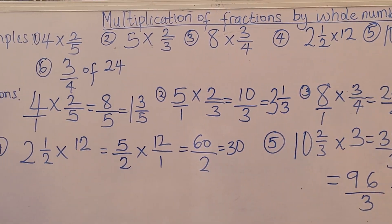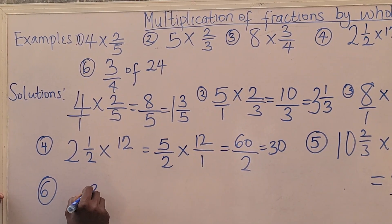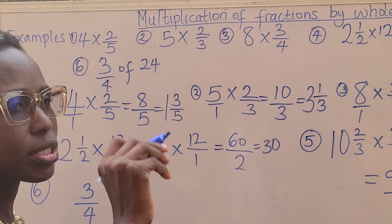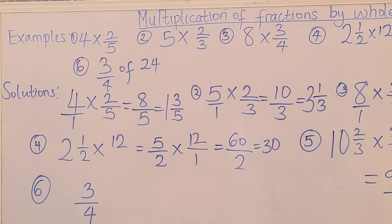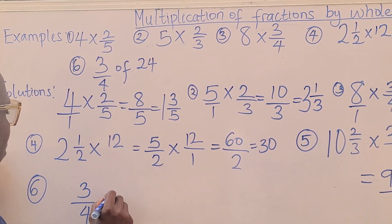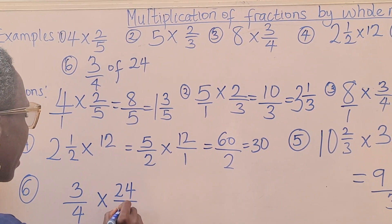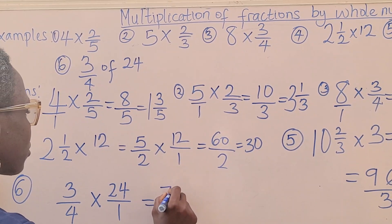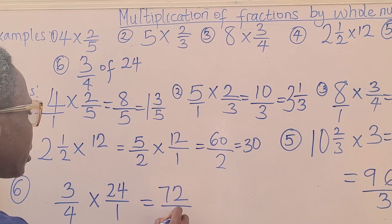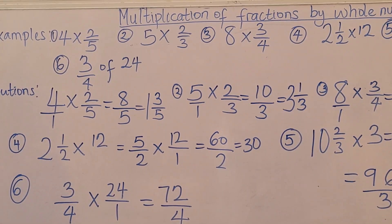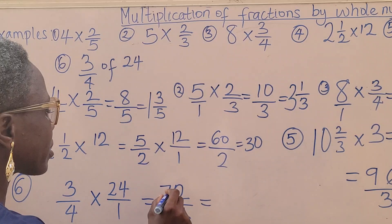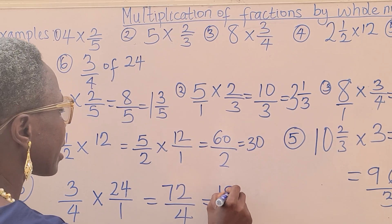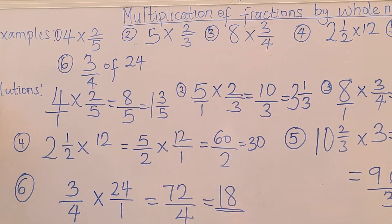Now the last question as seen on the board is this. That's just a variation. 3 over 4, of. In mathematics, of means multiplication. Of means what? Multiplication. So I'm going to, instead of writing of, I'm going to write multiplication. 24 over 1. Now 3 times 24 is 72. 4 times 1 is 4. So in this case, what is the next thing I will do? I will divide 72 by 4. 4 in 7, that's 1. 4 in 32, that's 8. So it means my final answer is 18.